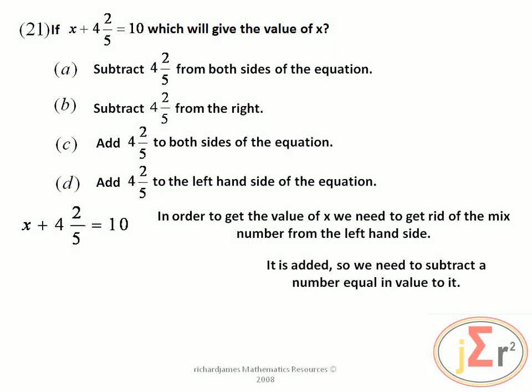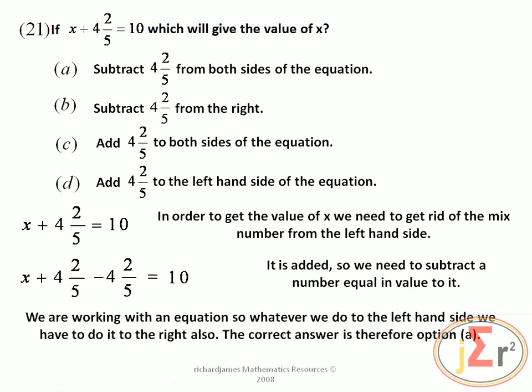Since it is added on that side, we are going to subtract that 4 and 2 fifths from the left hand side. We are working with an equation, so whatever we do to the left hand side we also have to do to the right hand side, otherwise the equation will not remain balanced.